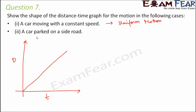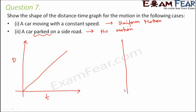A car parked on the side of the road means no motion - the car is at rest. In the distance-time graph, the distance value does not change with increase in time, so the graph would be a horizontal straight line parallel to the time axis.